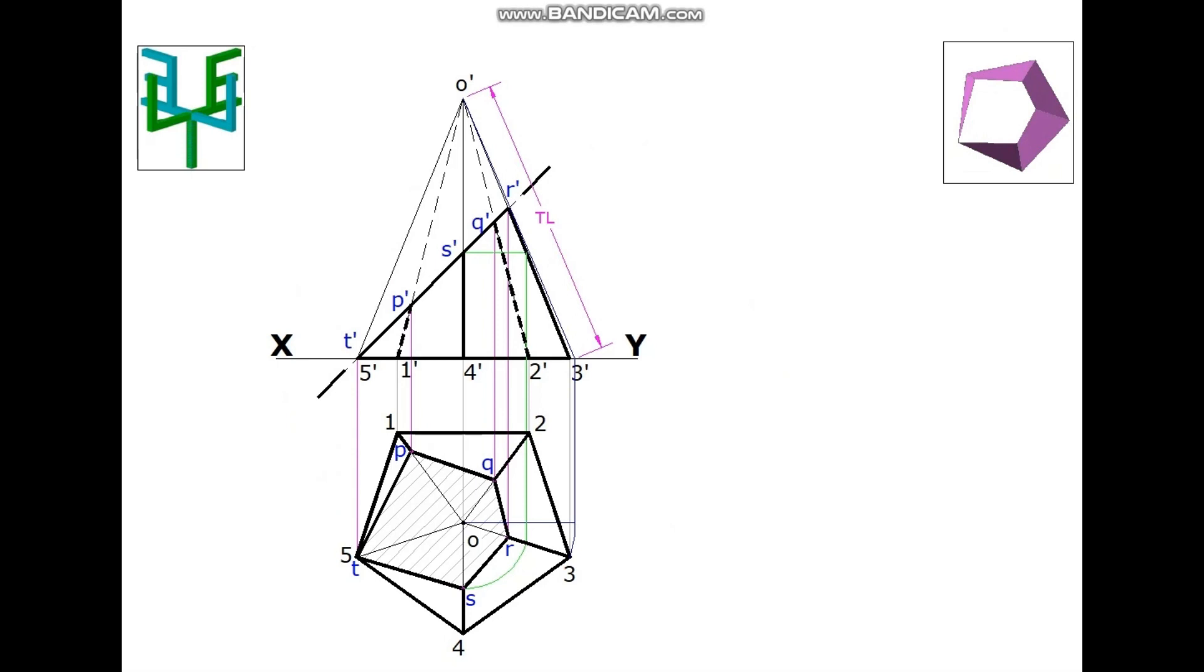Measure the distance of true length. Draw a line with the size of true length. Draw an arc with this distance as radius. Base edges are to be marked on this arc. Measure the base edge and mark 5 points on this arc.